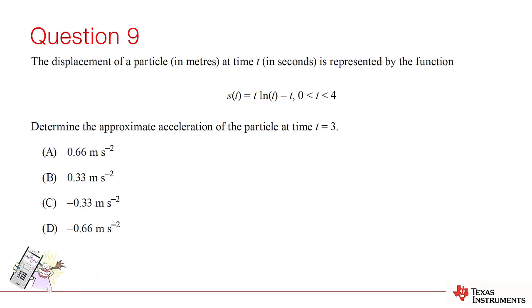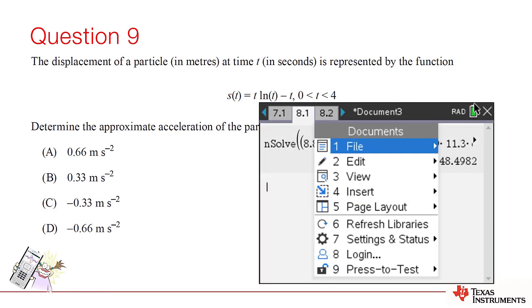Question 9. We are given an equation for displacement, and we need to know the acceleration when t equals 3. The derivative of displacement time yields velocity time. The derivative of velocity time yields acceleration time. So, we need to calculate the second derivative of S when t equals 3.